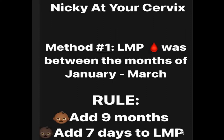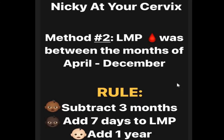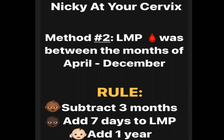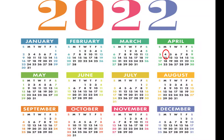Remember, if it's between those months we use Method One. Now let's move on to Method Two. We use Method Two if the first day of your last menstrual period was in the months of April through to December — so April, May, June, July, August, September, October, November, or December. Method Two states that we subtract three months, add seven days to the LMP, and add one to the year.